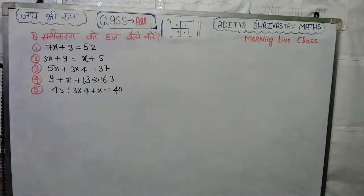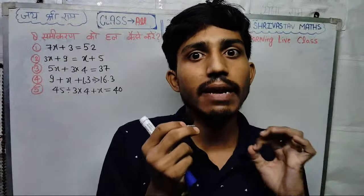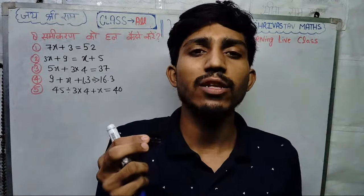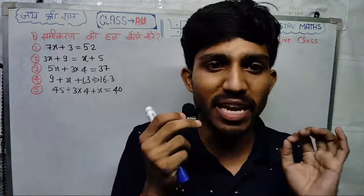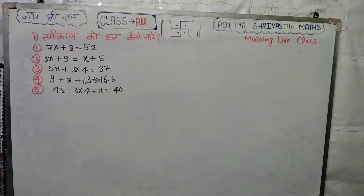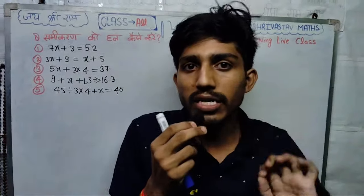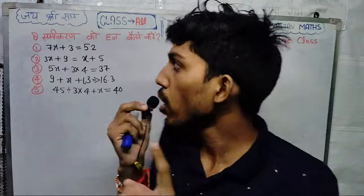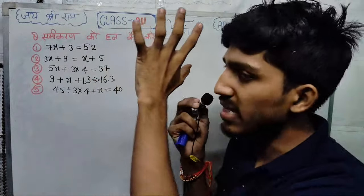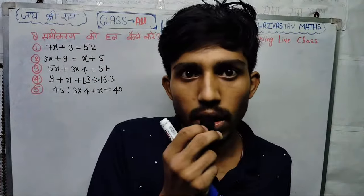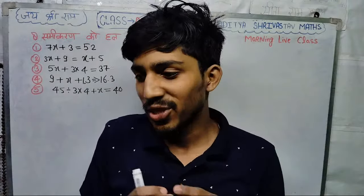We are going to say this is a basic math class, in which we are going to learn how to do the questions. I have written 5 questions here. When you start to do the 5 questions, I will give you another question. It is not about tension, children — it is not about tension. In every question I am going to lower the level, and as you go up to the top, your level will increase. So learn slowly.